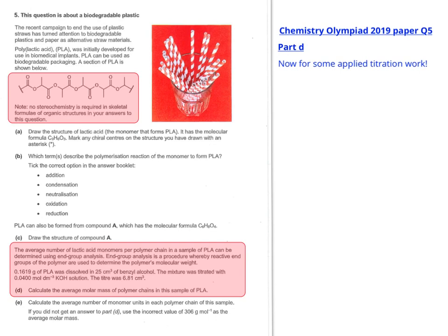So it tells you the amount of PLA was dissolved in 25 centimetres cubed of benzoyl alcohol. That just tells you the solvent. And the mixture was titrated with 0.0400 moles per decimetre cubed of KOH solution. And the titer, you can assume the average titer, is 6.81 centimetres cubed. So because this is a titration, or a moles calculation essentially, we can use the data moles equation, moles answer technique to simplify it somewhat.